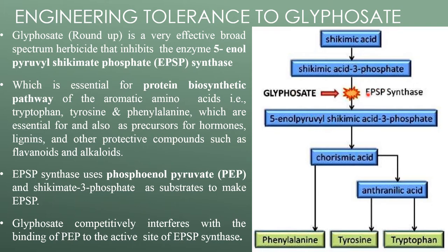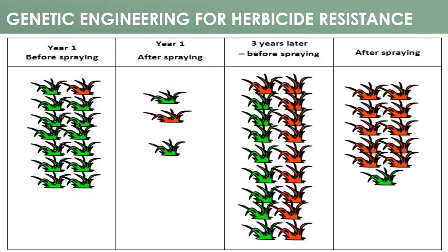The herbicidal activity of many herbicides results from the specific inhibition of a single enzyme or protein. Many of the targeted pathways are located in the chloroplast. There are three approaches: incorporating an insensitive EPSPS, overexpression of the target molecule, and incorporating molecules which can degrade the herbicide.